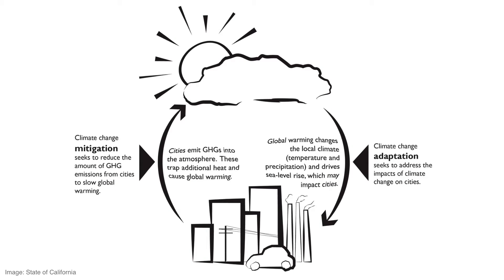First, we're going to start with clarifying some terms and definitions. This does often cause some confusion because these terms are used in different ways in different fields. If you take a look at this graphic and start in the middle, it explains the basic process of climate change. The things that we do in our communities that result in the combustion of fossil fuels — for example, driving our car or using electricity produced at a power plant — are what produce greenhouse gas emissions. The combustion of fossil fuels results in the emission of greenhouse gases, which accumulate in the atmosphere and further drive the greenhouse gas process globally, causing global warming and climate change.